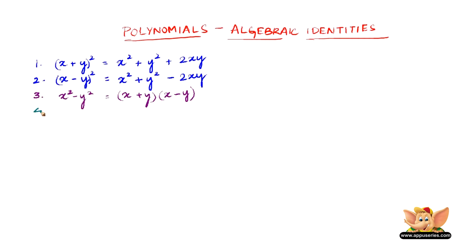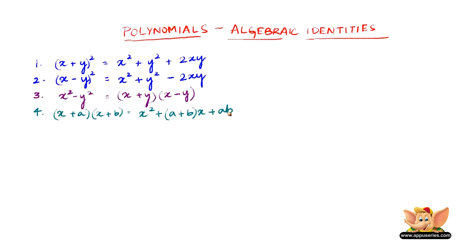The 4th identity is (x + a) into (x + b) equals x squared plus (a + b) into x plus ab.